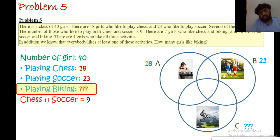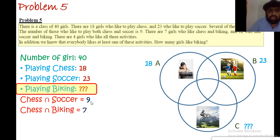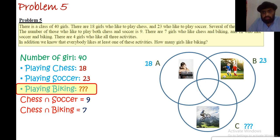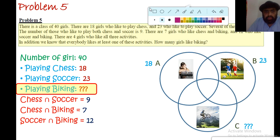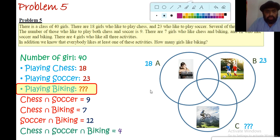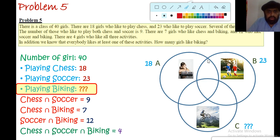The intersection of A and B — those who play chess and soccer — is 9. Chess and biking, A intersection C, is 7, so seven girls like to play both chess and biking, belonging to the overlapping area of both circles. There are 12 girls who like both soccer and biking, and four girls who like all three — chess, soccer, and biking — represented by the area in the middle.